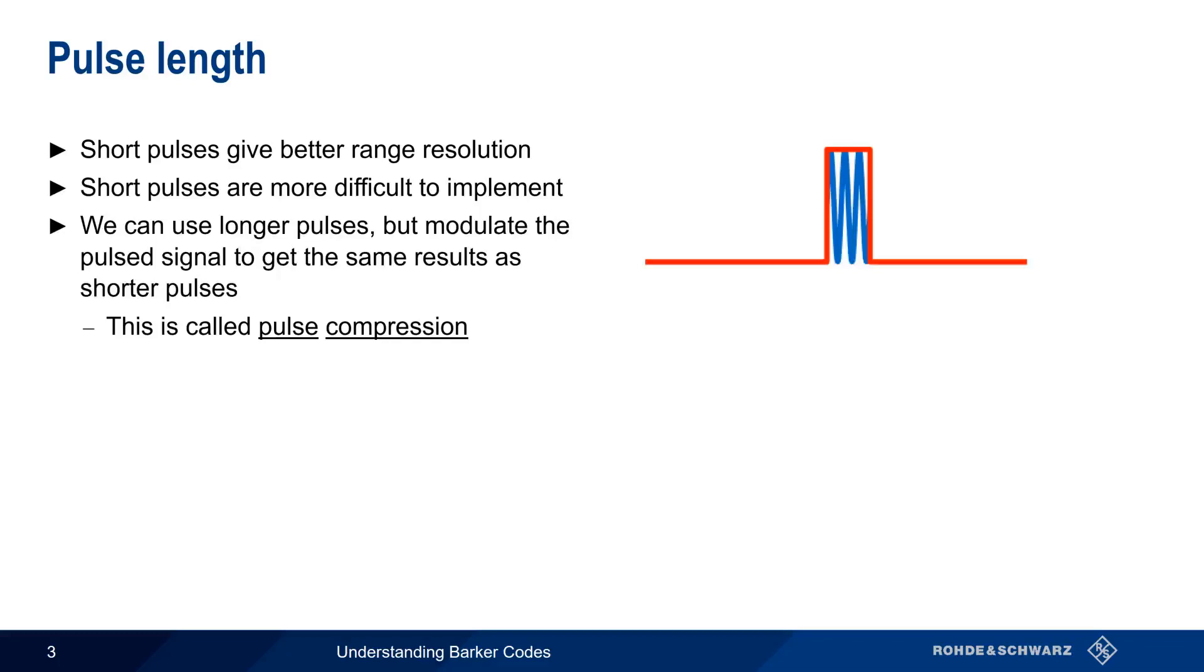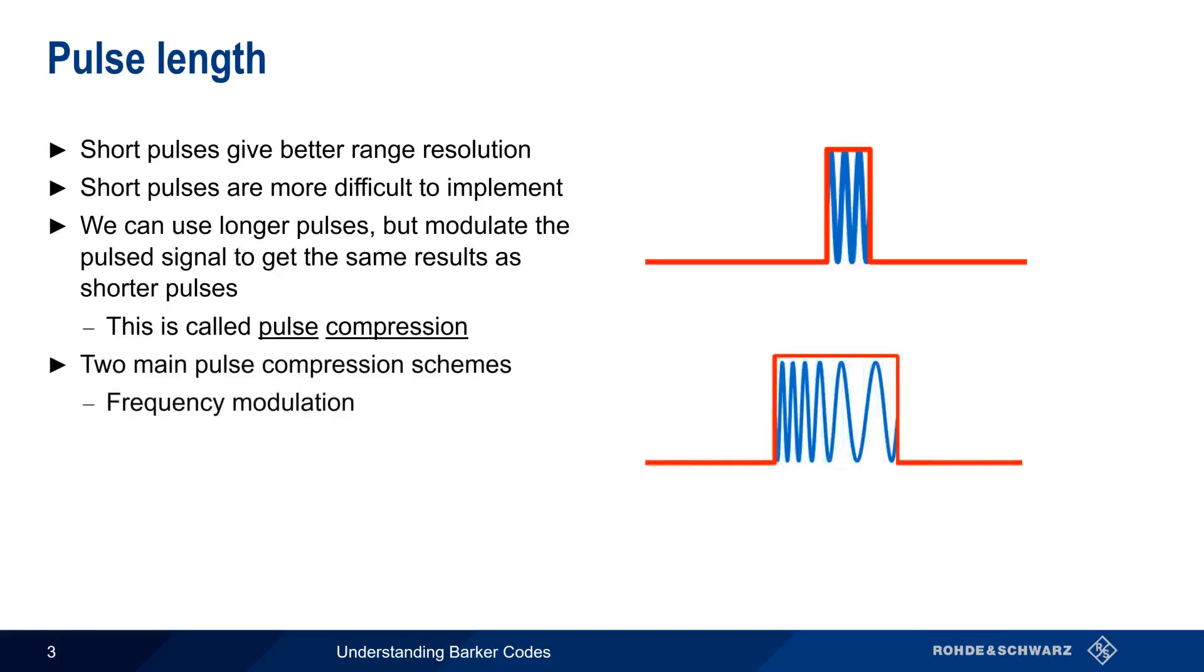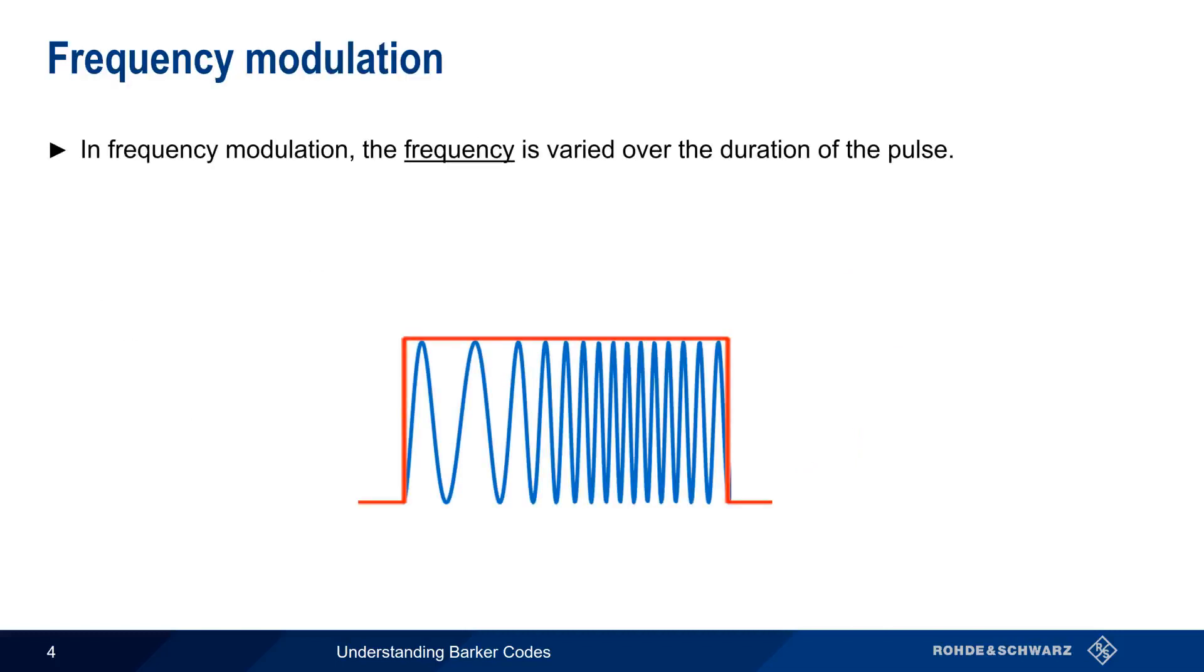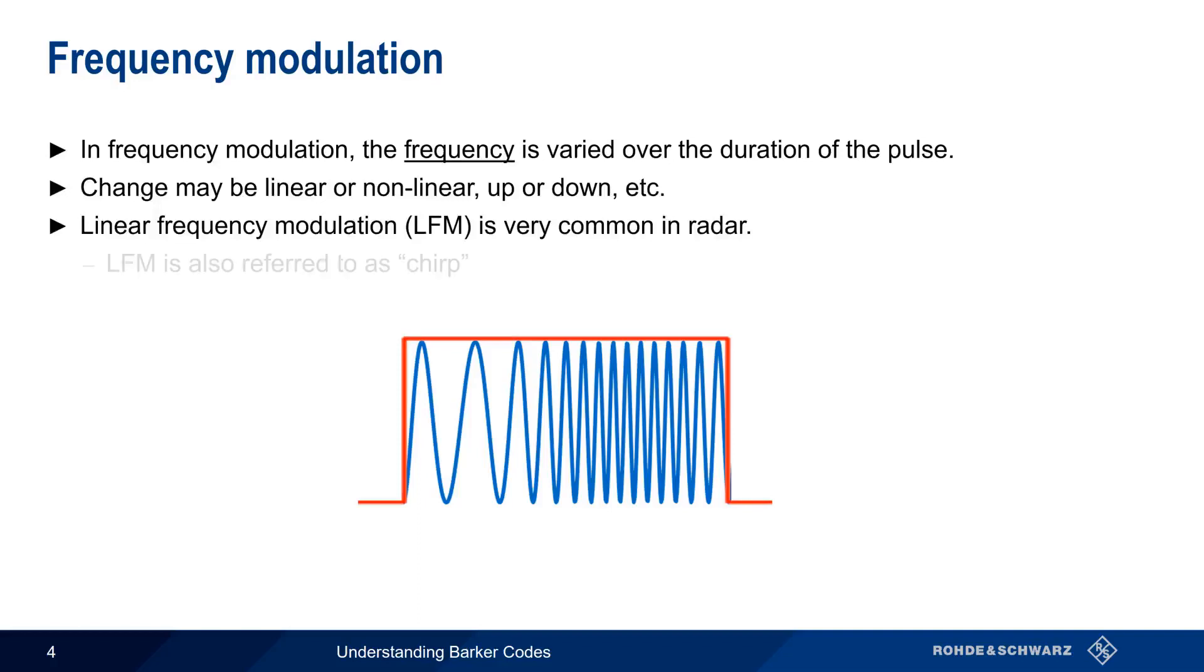There are a number of different ways of compressing pulsed signals, but most of them can be divided into two categories: frequency modulation and phase modulation. In frequency modulation, we vary the frequency during the duration of the pulse. This can be done in many different ways, sometimes linearly, sometimes up, sometimes down, etc. Linear frequency modulation is probably the most common form of pulse compression, or pulse modulation, and you'll often hear linear frequency modulation referred to as CHIRP.